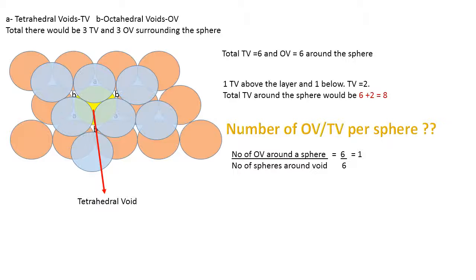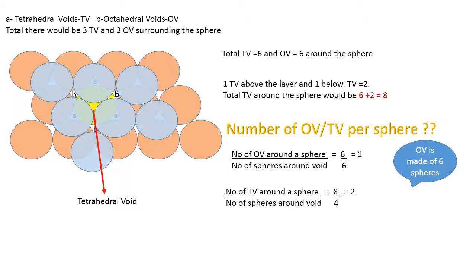As we know, there are 6 octahedral voids around the sphere, and the octahedral void is made up of 6 spheres. So the number of spheres around the octahedral void would be 6, and the answer comes to 1. Similarly, for tetrahedral voids, we know that there are 8 tetrahedral voids around the yellow sphere, and the tetrahedral void is made up of 4 spheres.